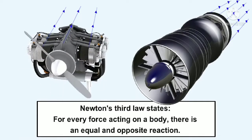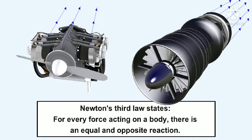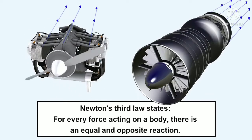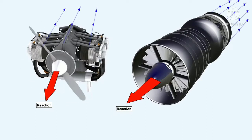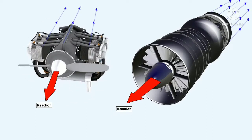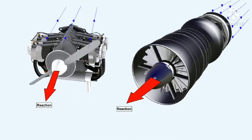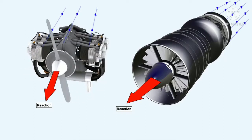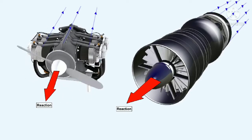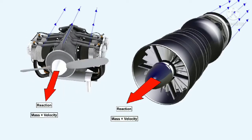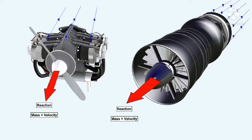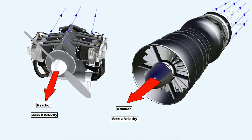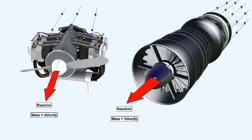Newton's third law states that for every force acting on a body, there is an equal and opposite reaction. In the two cases quoted — the piston engine propeller combination and the gas turbine engine — the force created by the mass of air being thrown backwards and its velocity generates a reaction in the opposite direction, driving the aircraft forwards. It must be remembered that the jet reaction does not result from the pressure of the jet on the atmosphere. In all instances, the resultant reaction or thrust exerted on the engine is proportional to the mass or weight of the air expelled by the engine and the velocity change imparted to it.